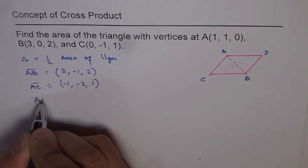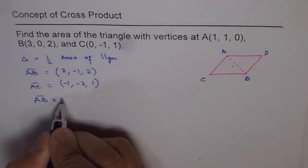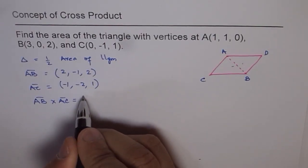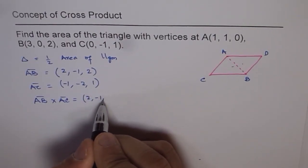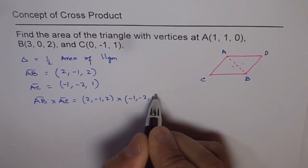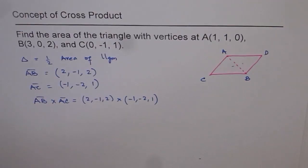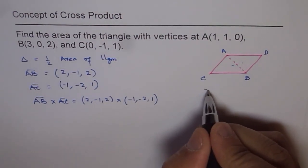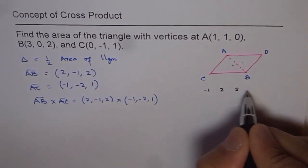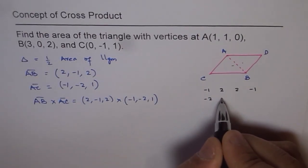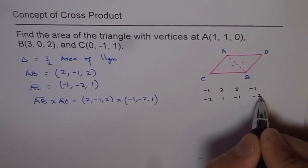Now what is cross product of AB and AC? Cross product of this is (2, -1, 2) cross (-1, -2, 1). Now to find cross product, we can write these numbers in row, starting with the middle number. So the middle number here is -1, -1, 2, 2, and end with the middle number. And now here again is -2, 1, -1, end with -2.